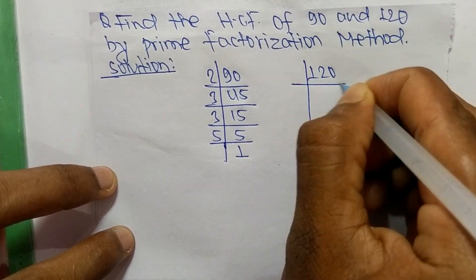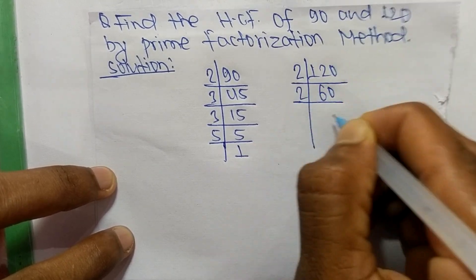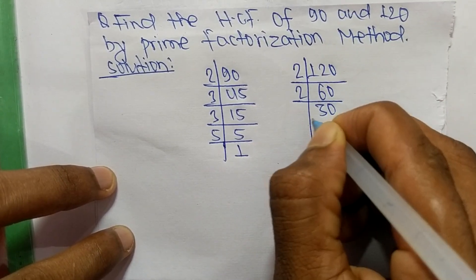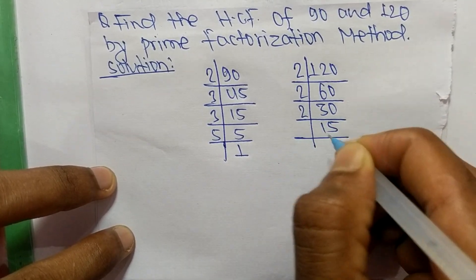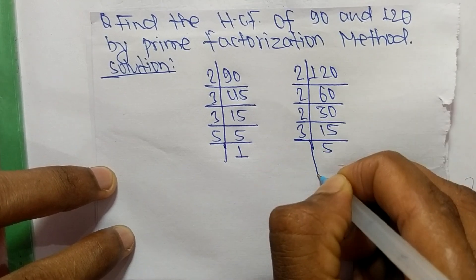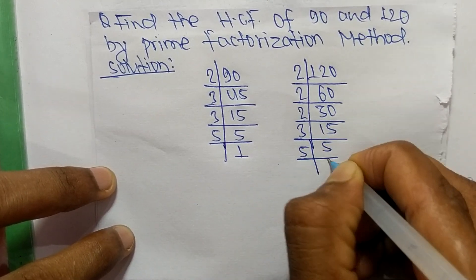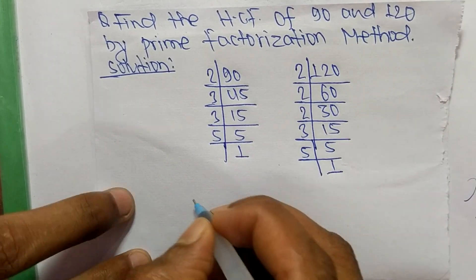The prime factors of 120 are: 2 times 60 means 120, 2 times 30 means 60, 2 times 15 means 30, 3 times 5 means 15, and 5 times 1 means 5.